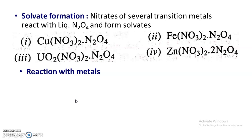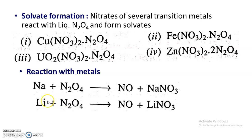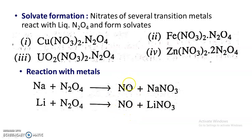Finally, in reactions with metals, active metals like sodium and lithium react with dinitrogen tetroxide in the liquid medium. During these reactions, nitric oxide gas is evolved. In this way, dinitrogen tetroxide reacts with metals with evolution of nitric oxide.